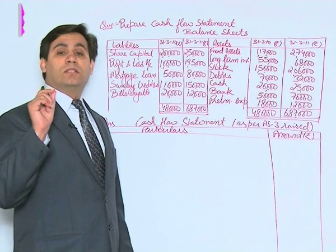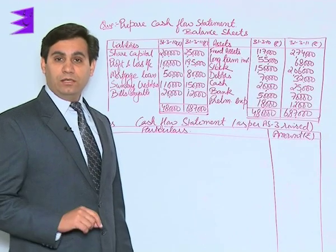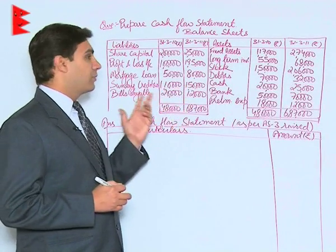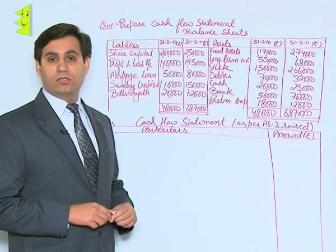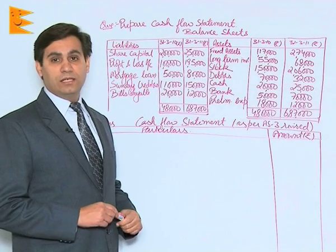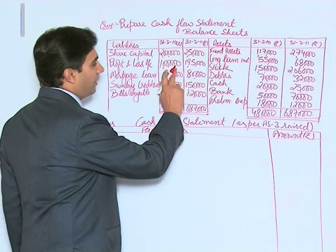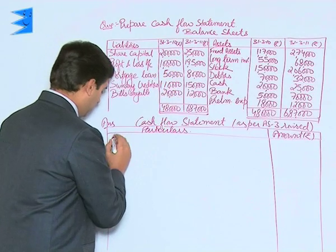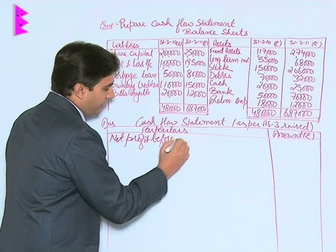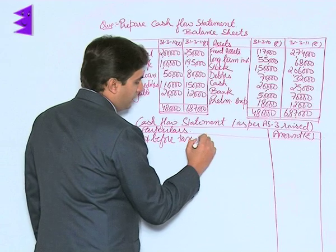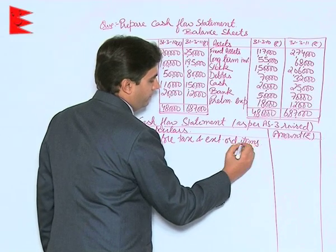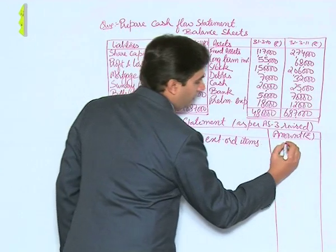The first thing required is the difference of the profit and loss account as on the two given dates. To this difference we add appropriations, but in this question there are no appropriations — no reserve, no taxation, no proposed dividend. So the difference of the profit and loss account would be net profit before tax and extraordinary items. In this case, the difference is ₹1,95,000 minus ₹1,00,000, giving net profit before tax and extraordinary items of ₹95,000.